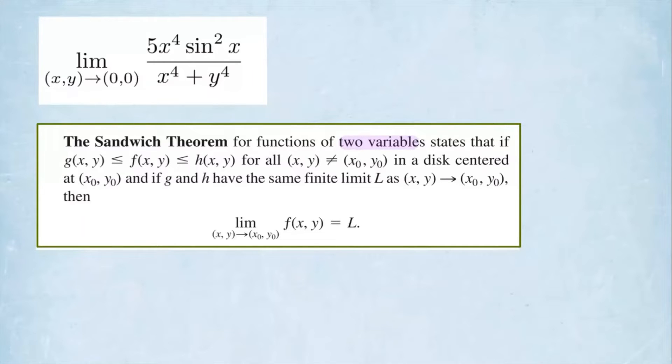It states that if you are looking for the limit of f(x, y) as (x, y) approaches (x₀, y₀), if you can bound this function between two other functions, when you take the limit, if g(x, y) and h(x, y) approach the same limit, then we can say that the function that's trapped between them, which is the one we're looking for, will also go to the same limit. So that's what we're stating right here.